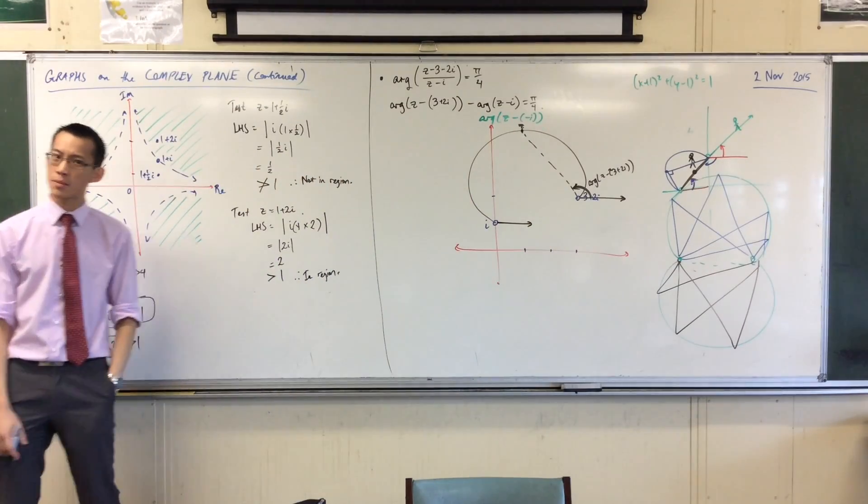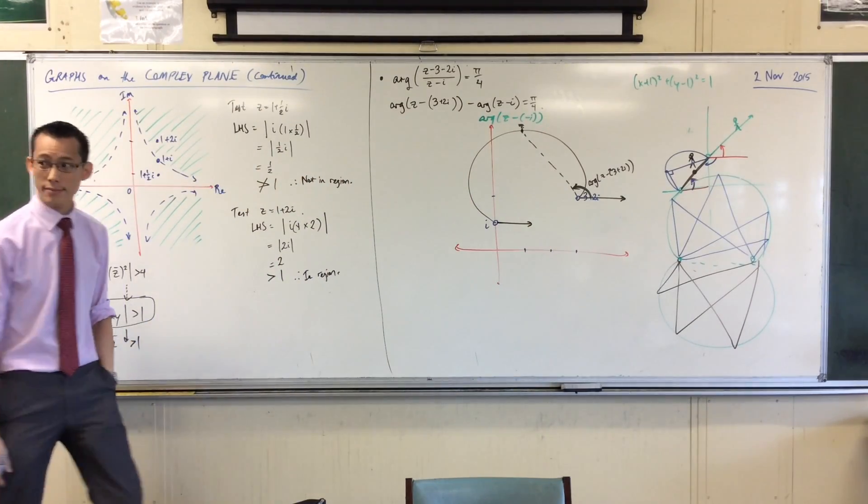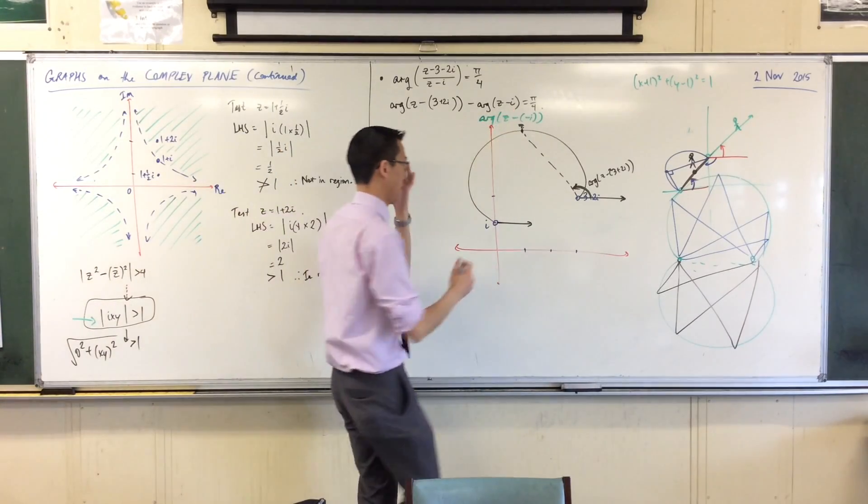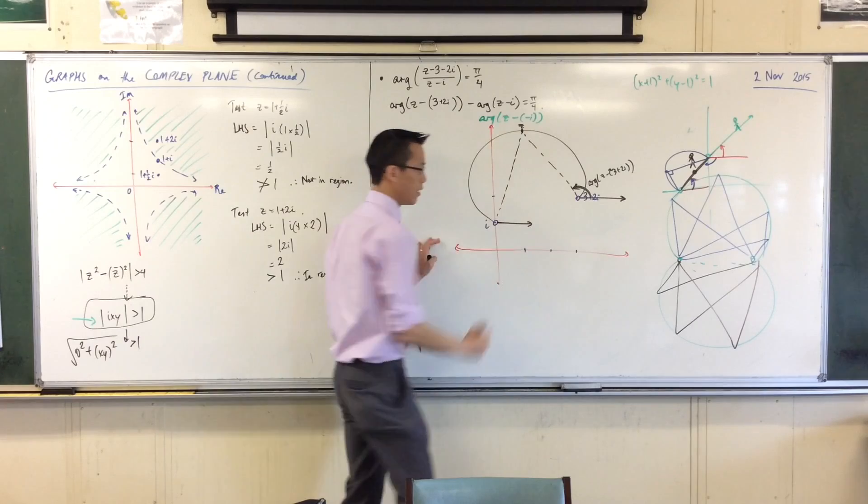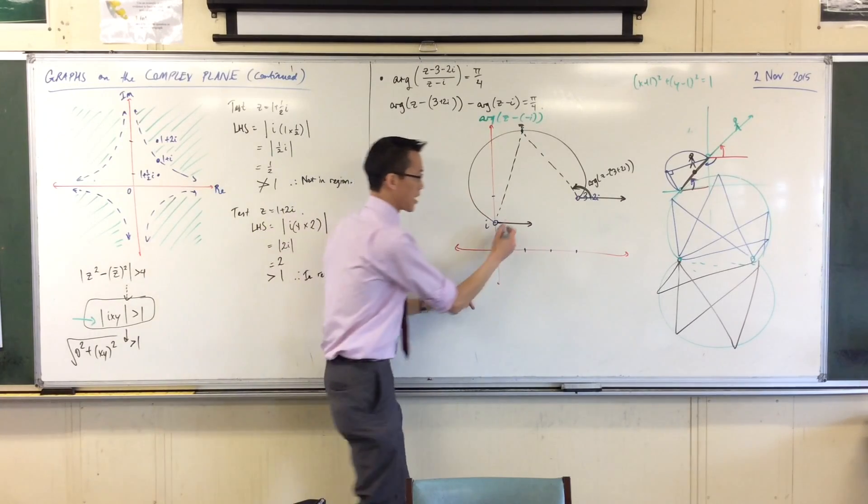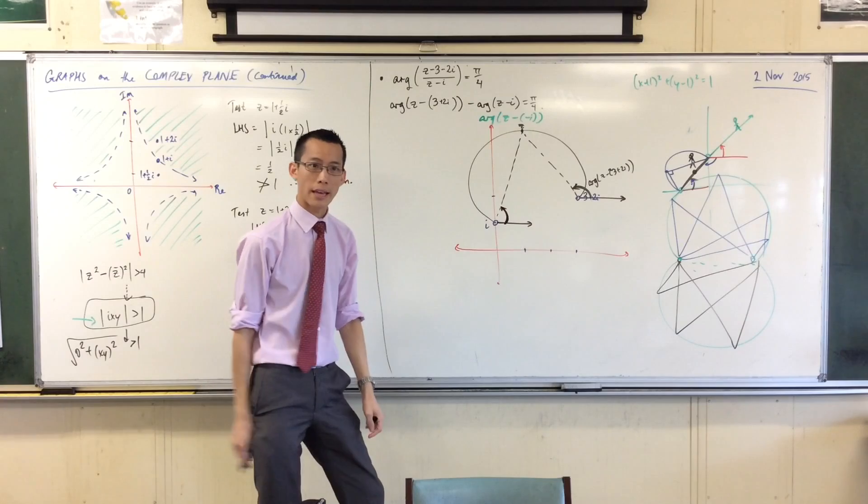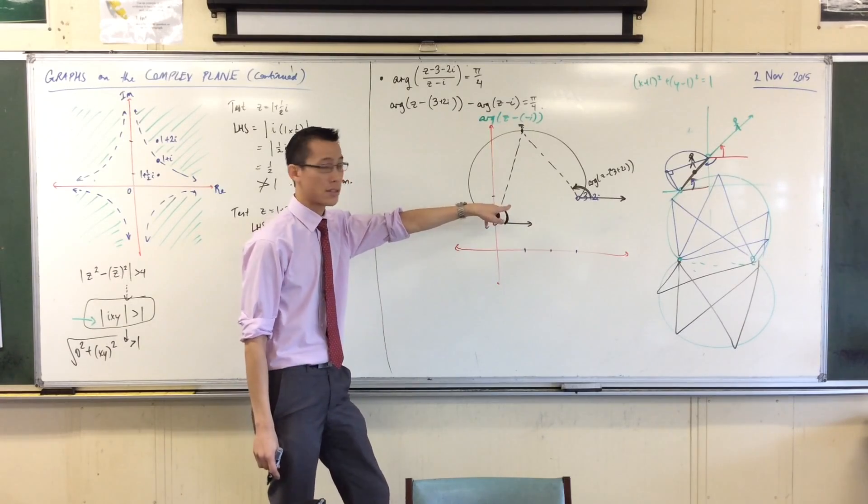Now where's the argument that it's measuring? It's going from i up to Z, where I'm saying Z should be. Okay, so something like this. Okay, so this is my argument here. This one here. Okay, so that's arg Z minus i.